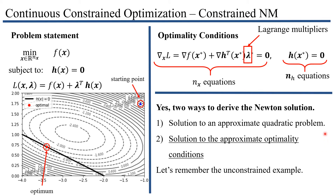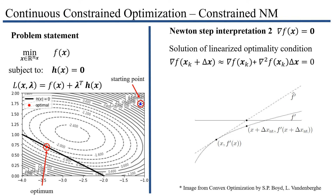We just derived the Newton step for constrained optimization using the solution to an approximate quadratic problem. Now we're going to look at how we derive the Newton solution from an approximate optimality conditions perspective. In the unconstrained case, our optimality conditions were simply the gradient equal to zero. We approximated that by a first-order approximation, which introduced the Hessian, and solving that system gave us the Newton step for the unconstrained problem.